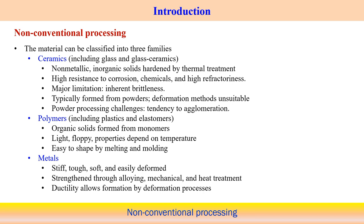Ceramics include glass and glass ceramics. This type of material is non-metallic and consists of inorganic solids which are hardened by thermal treatment. They have very high resistance to corrosion, chemicals, and high refractoriness. However, the major limitation is that ceramics are inherently very brittle. It is very difficult to process ceramics starting from a billet form as we follow in the case of metallic components. Instead, we start from powders and try to make different components following different manufacturing processes.